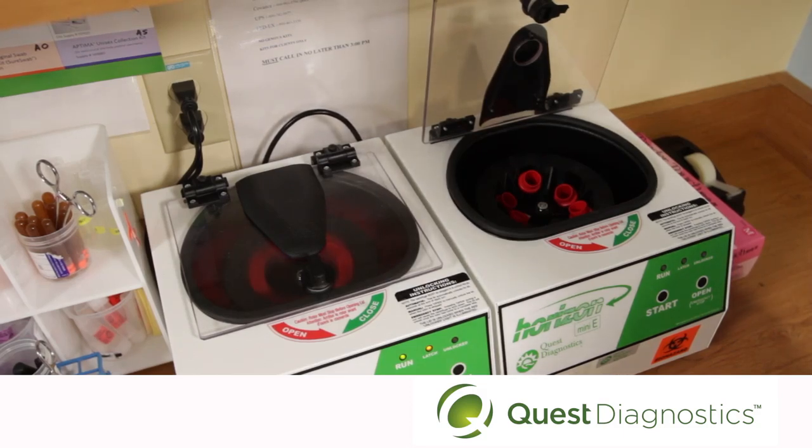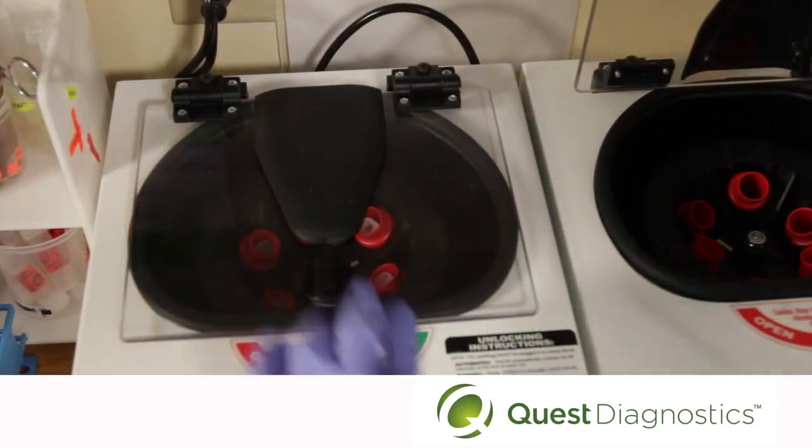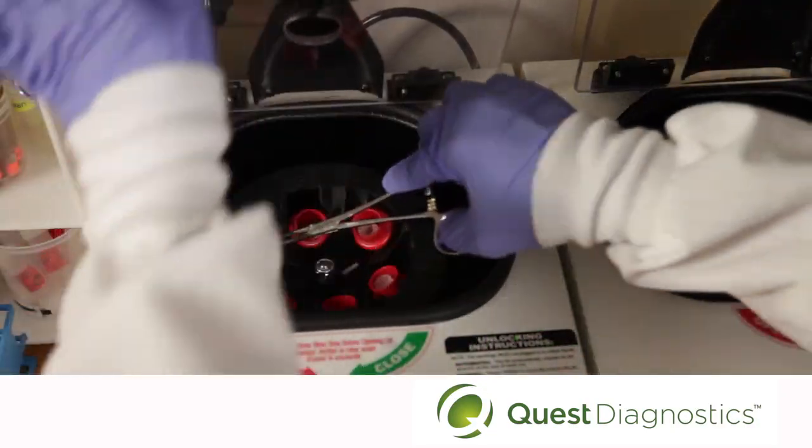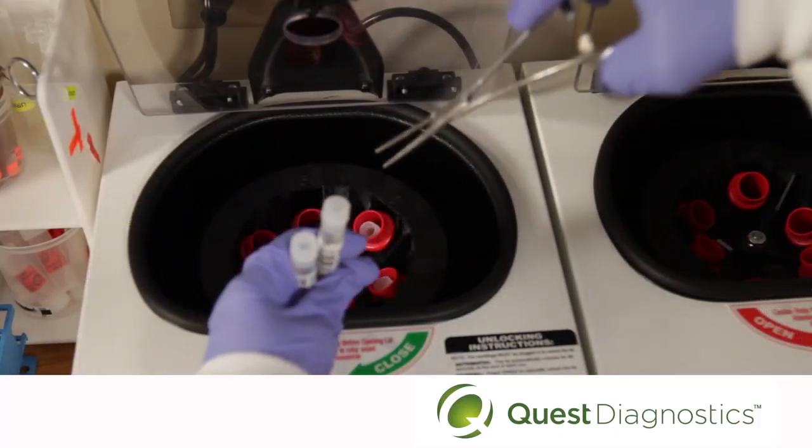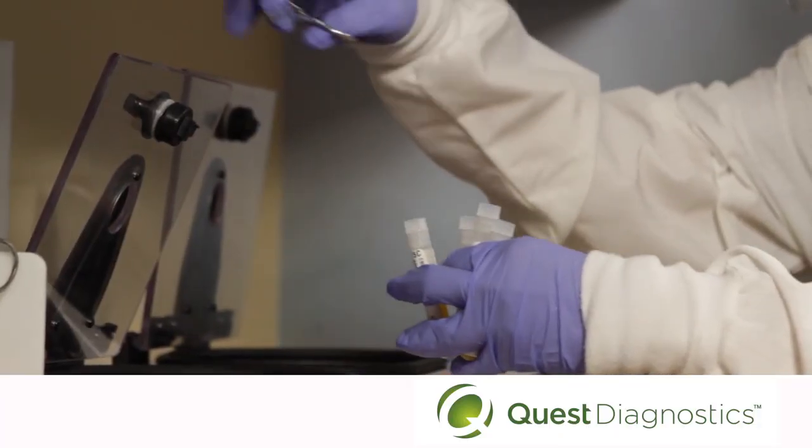Again, ensure tubes are balanced in the centrifuge. Once the tubes have spun for 15 minutes at 1500 G, carefully remove the tubes from the centrifuge and place in the rack.